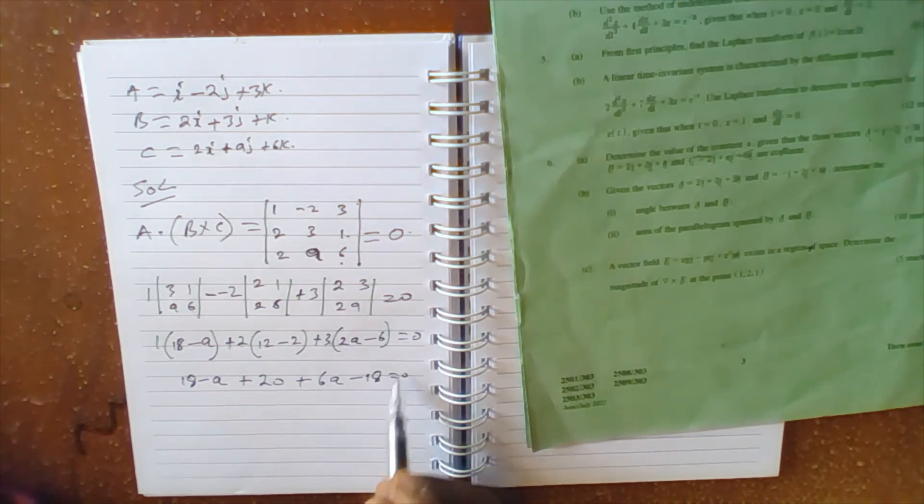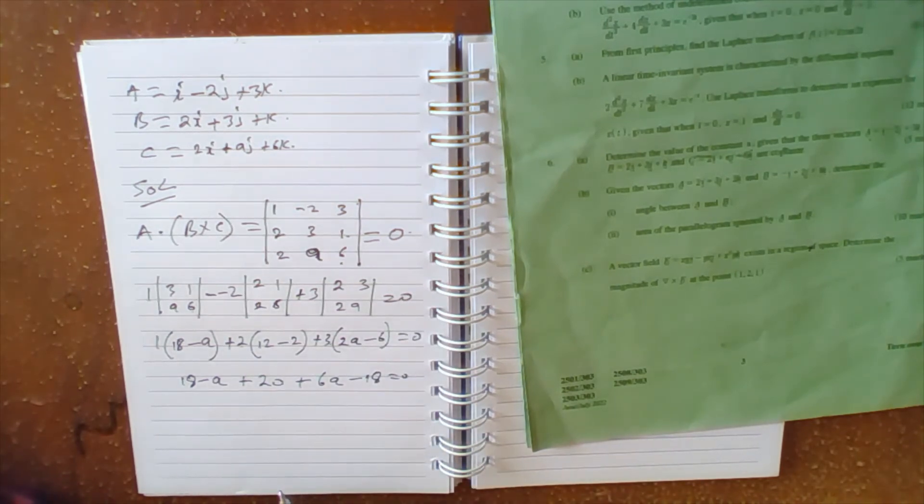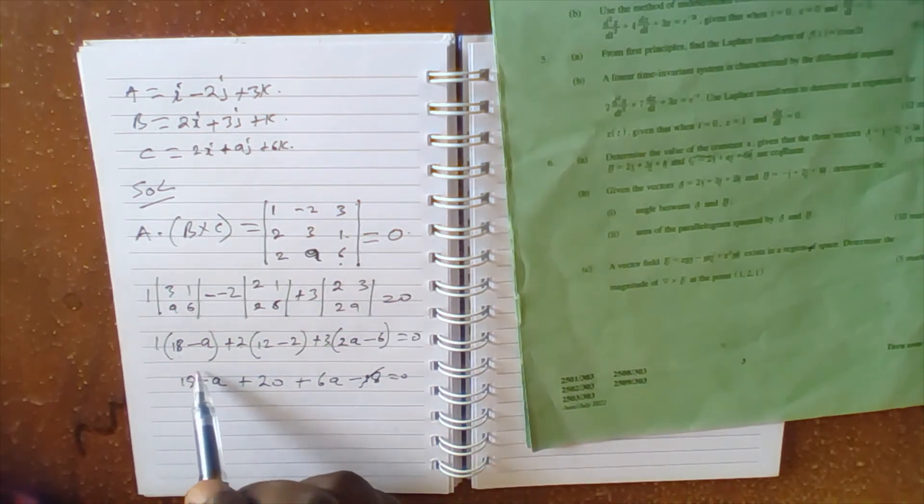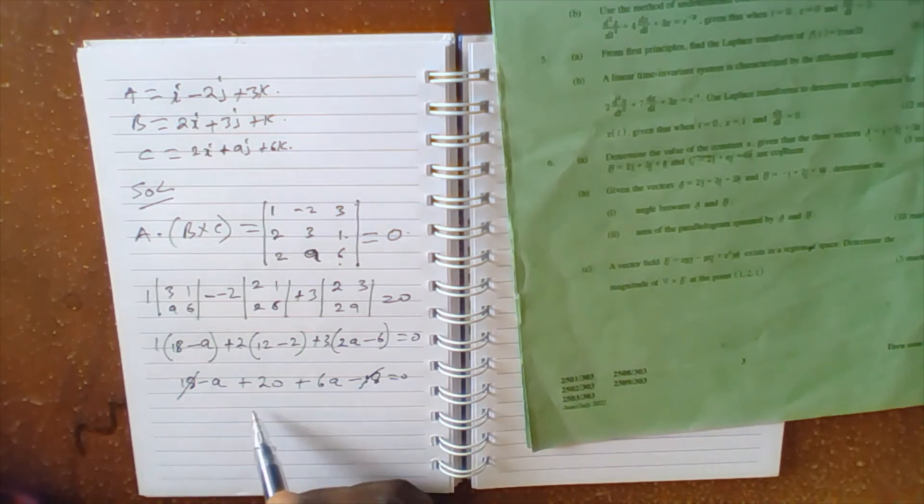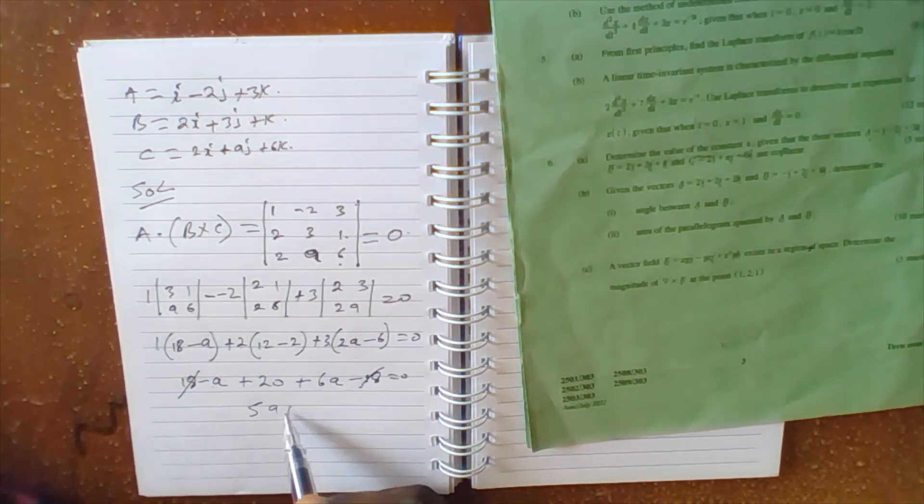We have 18 and minus 18 cancel. 6a minus a gives 5a, plus 20 equals to 0.